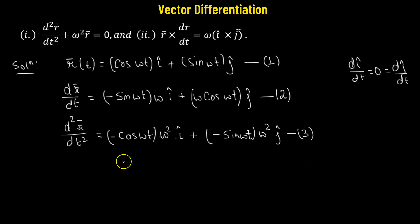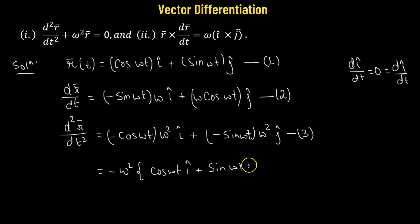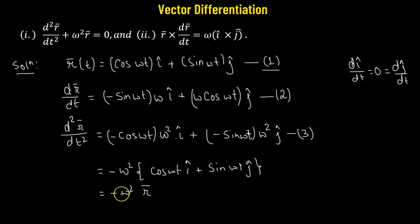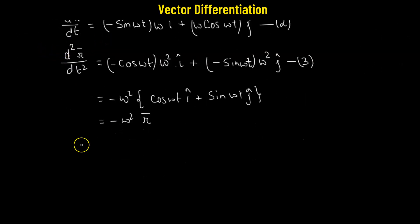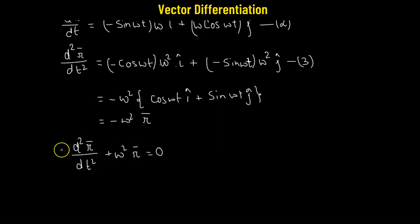We can rewrite equation 3 by factoring out -ω² from the right-hand side, giving -ω² times (cos(ωt)î + sin(ωt)ĵ). That expression in parentheses is simply the vector r from equation 1, so we have r'' = -ω²r. Moving -ω²r to the left-hand side, we obtain r'' + ω²r = 0, which proves part 1.